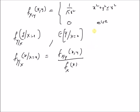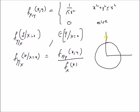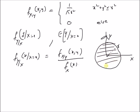Graphically, we can visualize this problem as follows. Given the joint PDF defined on the circle — with the Y axis, X axis, and the circle of radius R — the joint PDF is 1/(π R²) on this shaded circular region.